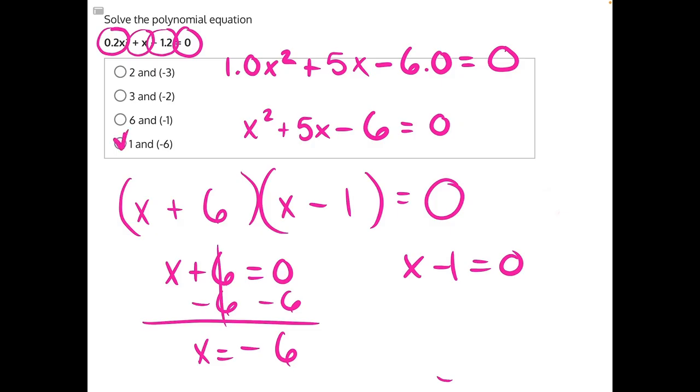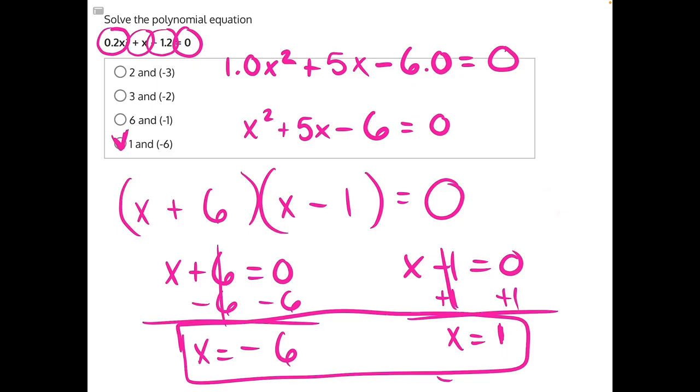For this next one, 1 is being subtracted from x so the opposite operation is to add 1 to both sides. These will cancel giving us x is equal to 1, making the last answer choice, answer choice D, our correct answer.